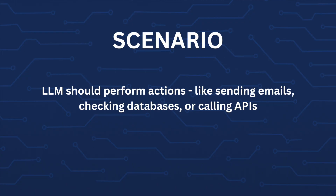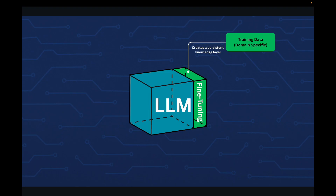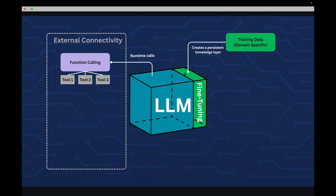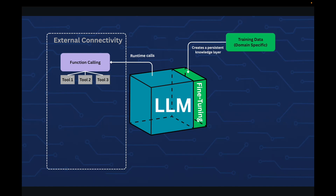Now consider another use case. What if you need your LLM to perform actions like sending emails, checking databases, or calling APIs? That's where function calling becomes essential. Function calling allows your LLM to connect with external tools and services in real-time. Instead of just generating text, it can now do things — send emails, query databases, fetch weather data, control smart home devices, and even tell the correct time.